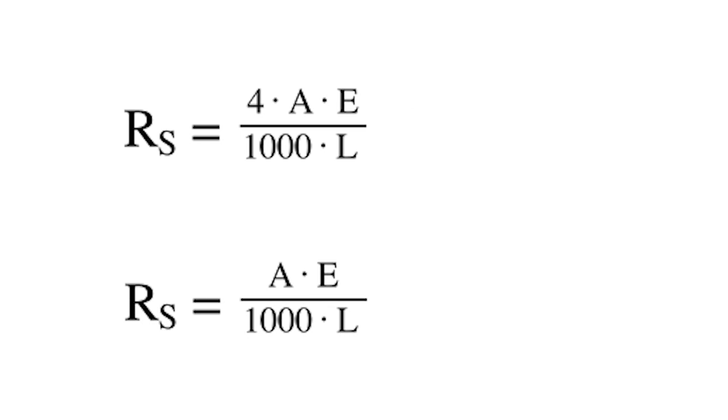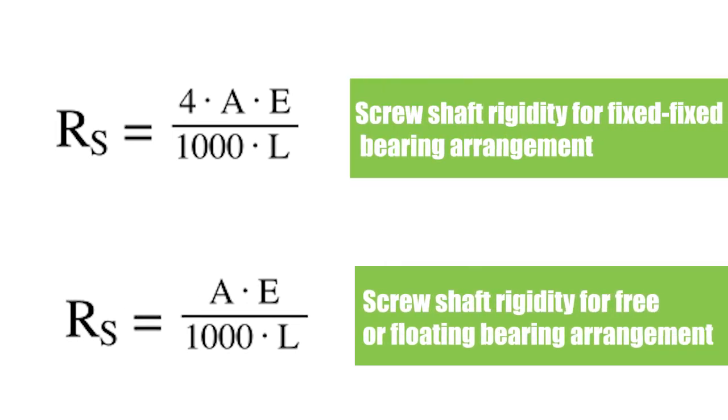Comparing the equation for rigidity with a free or floating end bearing arrangement with that of a fixed-fixed end bearing arrangement, you can see that the screw shaft rigidity is four times higher when fixed-fixed mounting is used than with fixed-free or fixed-floating mounting.